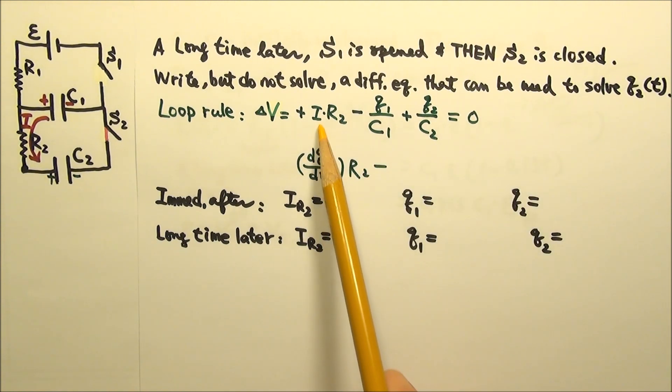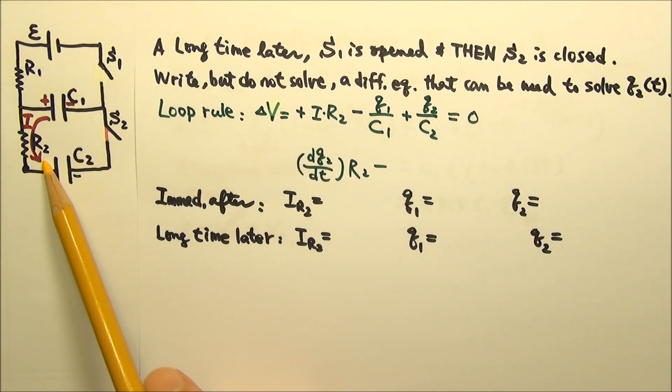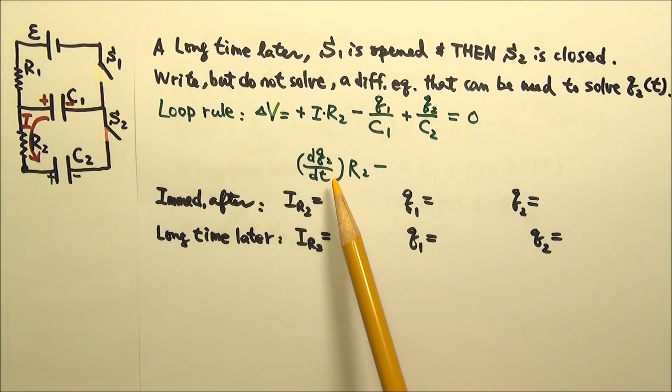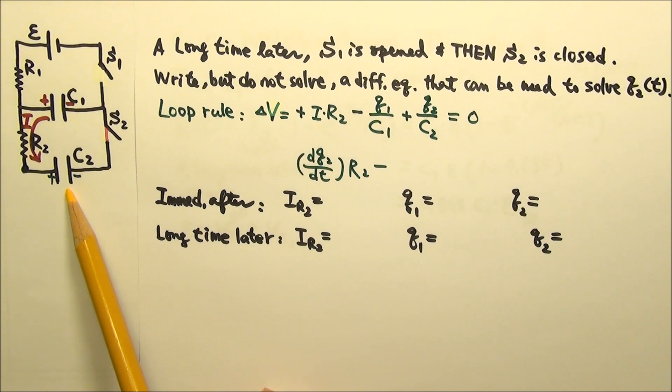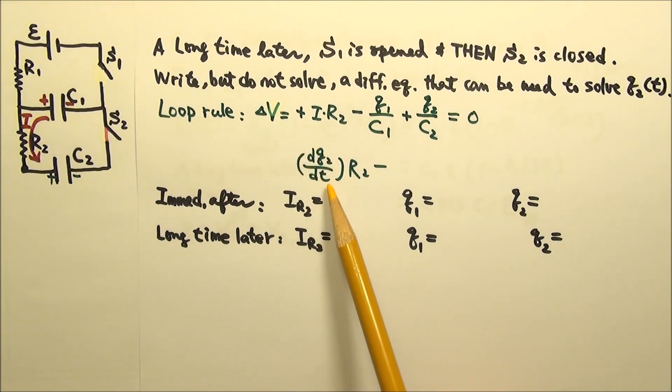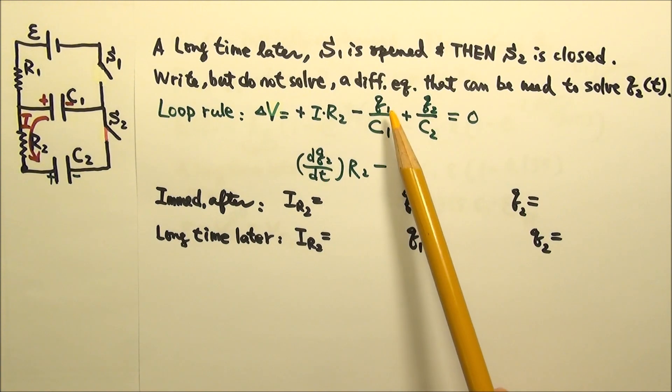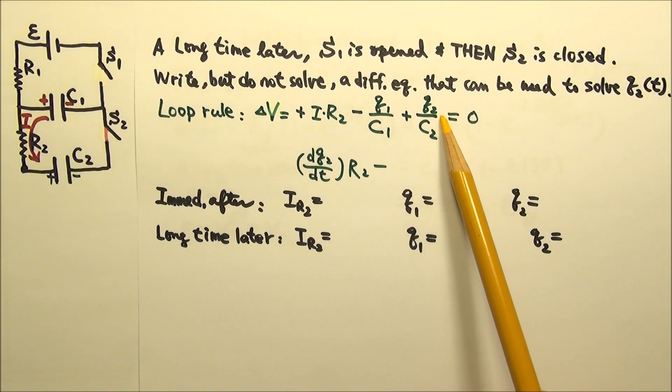We know that the current is in the correct direction, so this current should not be negative. Since C2 is being charged, Q2 is increasing, so dQ dt is a positive number, which is just fine, no need to fix the sign. What about Q1? How can we replace Q1 in terms of Q2?